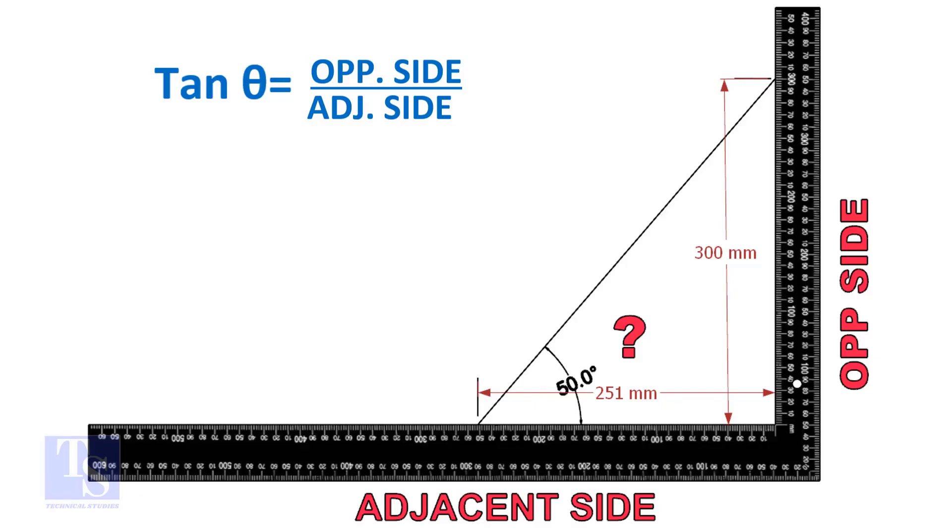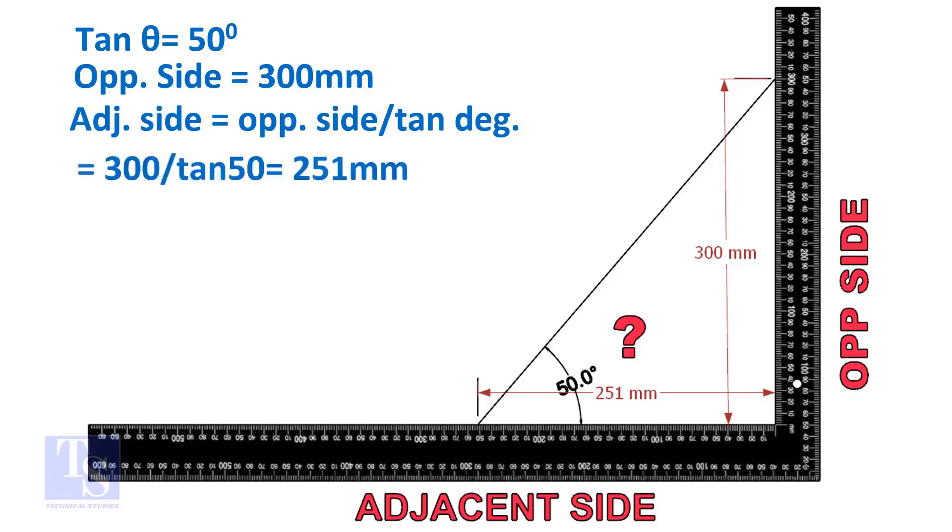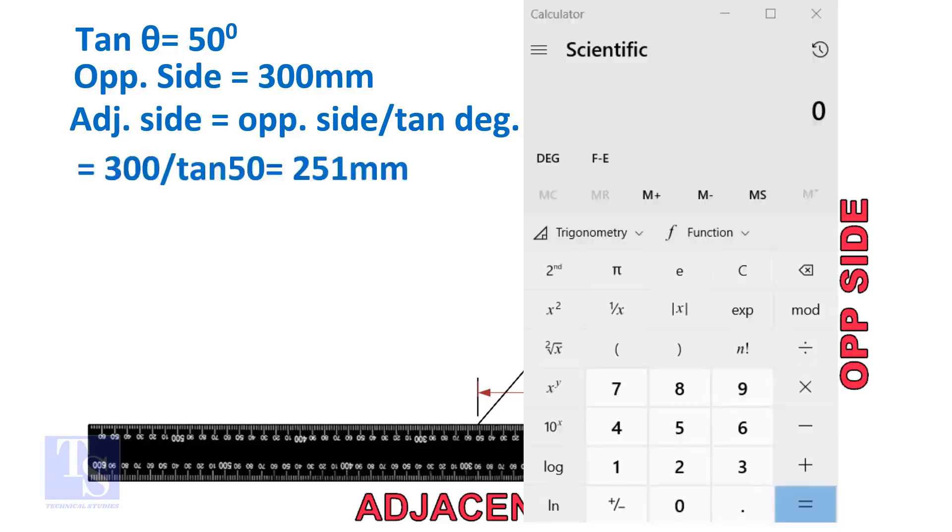Let us assume the opposite side is 300 millimeters. But you can take any suitable dimension as required. Adjacent side is equal to 300 divided by TAN 50 degree. Let us calculate.